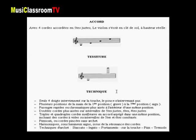La technique du violon semble assez simple. La main droite tient un archet qui va frotter les cordes de l'instrument tenues par la main gauche. La main gauche n'utilise sur la touche du violon que quatre doigts puisque le pouce n'intervient pas. Il existe plusieurs positions de la main, de la première position la plus grave à la septième position la plus aiguë. Lorsque le violoniste exécute des passages rapides, difficiles ou chromatiques, il sera plus facile de les faire à l'intérieur d'une même position.